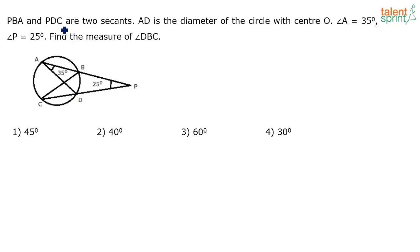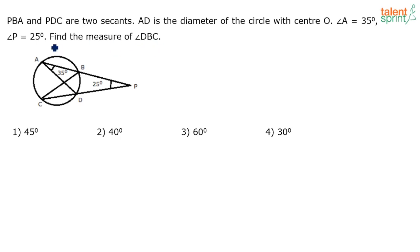PBA and PDC are two secants. AD is the diameter of the circle with center O. Angle A is 35 degrees and angle P is 25 degrees. We need to find the measure of angle DBC.